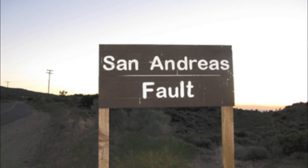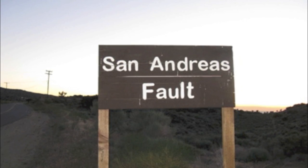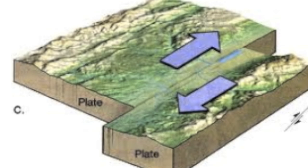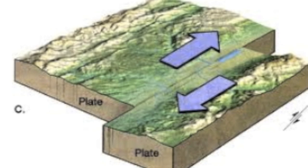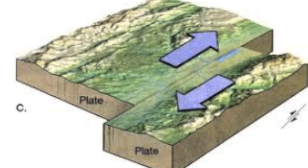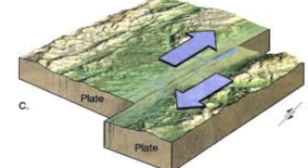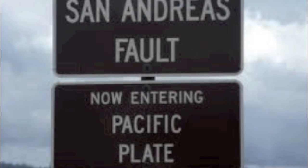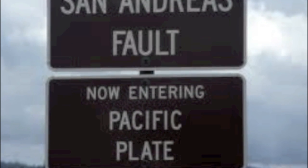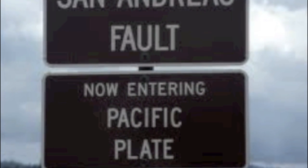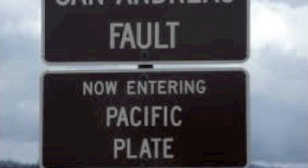The San Andreas Fault, by Gibran Khalil. The San Andreas Fault is a continental transform fault, meaning a fault that moves horizontally on land, which runs through California. The fault's length is about 810 miles, or 1,300 kilometers. The San Andreas Fault forms the plate boundary between the Pacific Plate and the North American Plate, and is the most famous fault in the world.